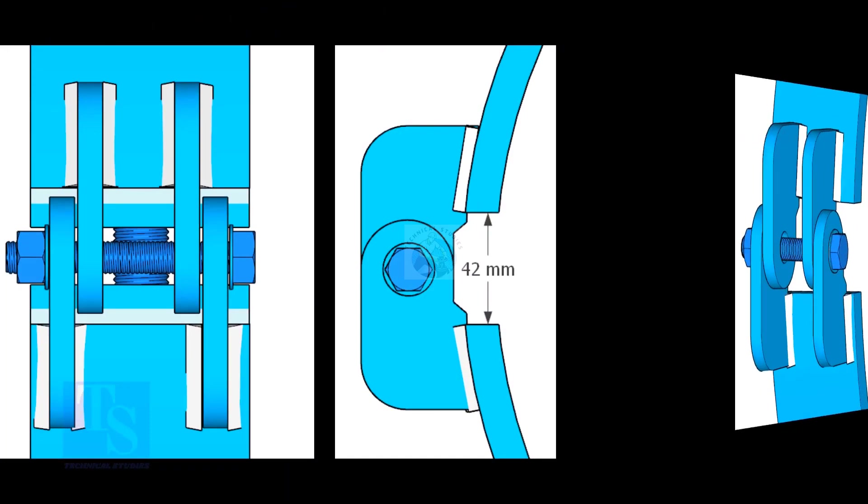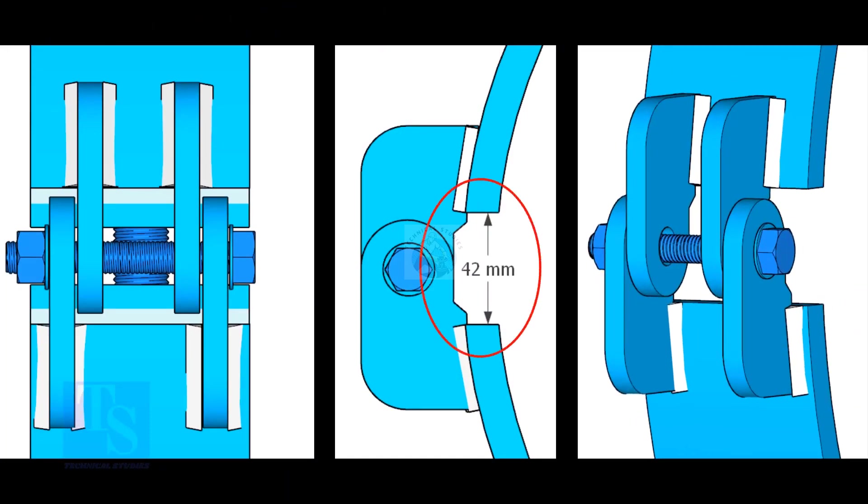Weld the hinges as shown. Five millimeters fillet weld is enough. The gap shown is not very important. It depends on the thickness of the clamp.